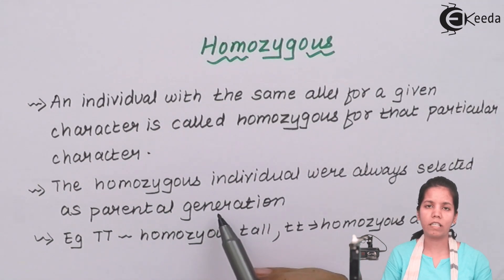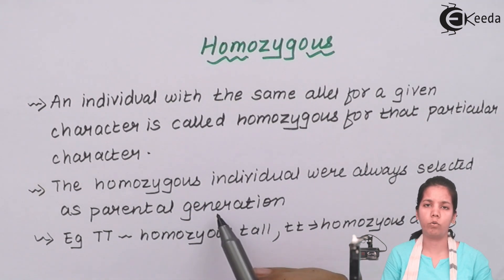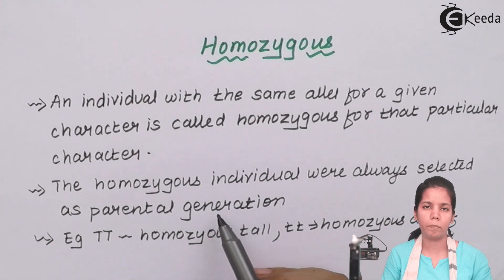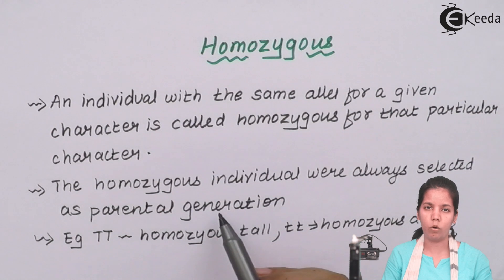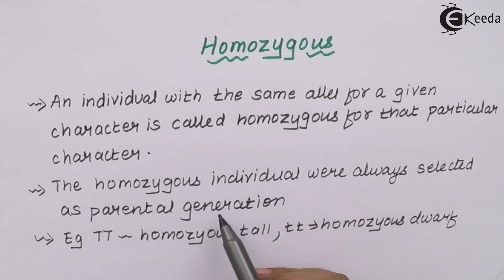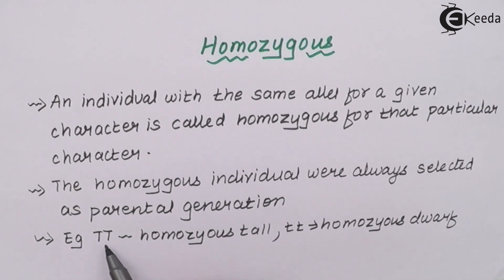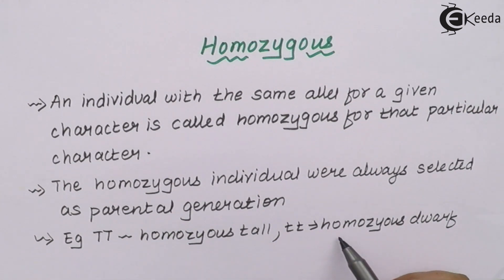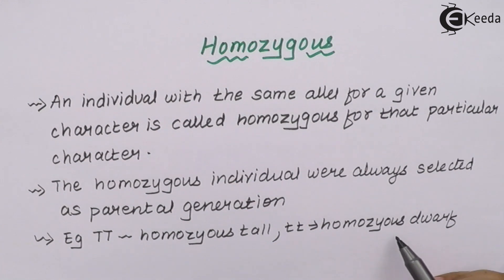Heterozygous parents, when crossed, can show a large amount of variation and heredity, which Mendel did not want to see in his initial hybridization experiments. Even when he studied the law of dominance and co-dominance, he first crossed pure breeds and then later crisscrossed the F1 and F2 generations. In homozygous parents, capital T, capital T stands for homozygous tall, whereas small t, small t stands for homozygous short.